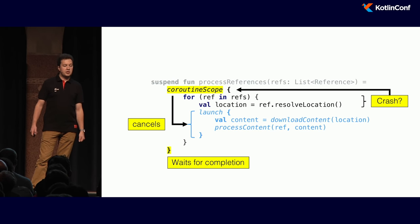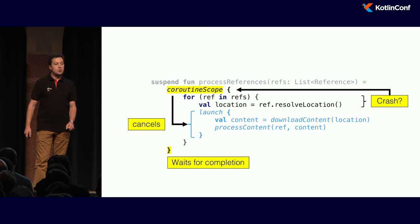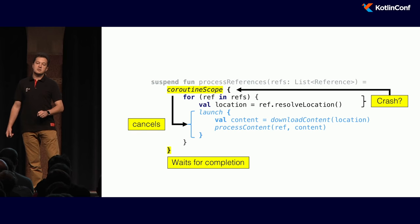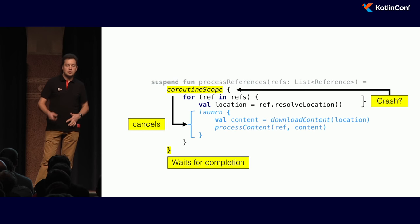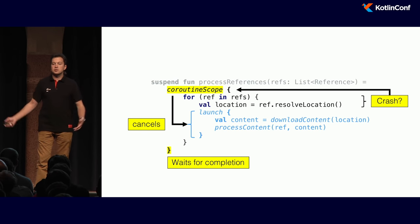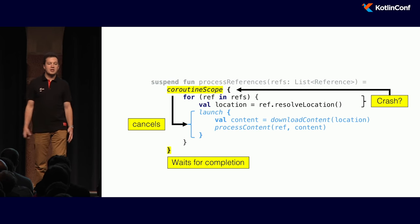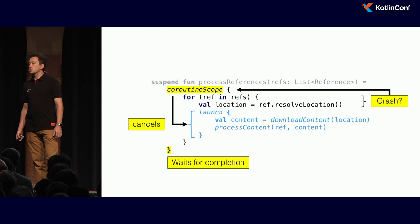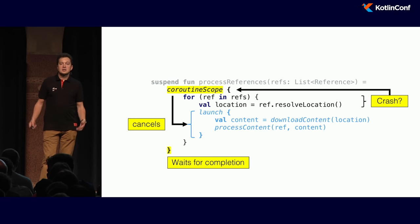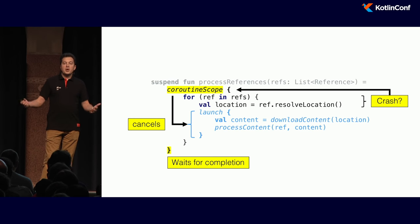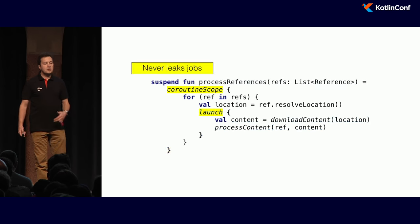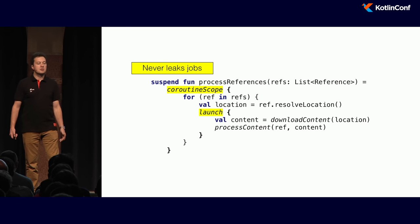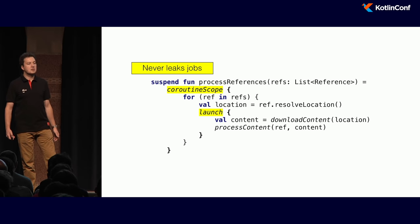Now if this piece of code crashes, the exception goes through the scope, and the scope cancels all the children coroutines it had already launched — so there's no leak. And not just cancelled — the scope won't return until they're all complete. It lets them finish whatever they were doing, close resources, execute their finally sections, do cleanup, and only then returns. So when our `processReferences` function returns, we have a clean state. We can safely retry it, knowing it had not leaked a single coroutine, had not leaked a single job.